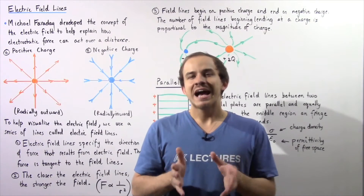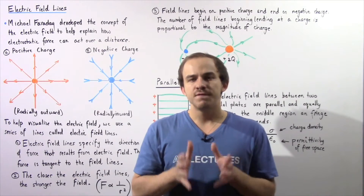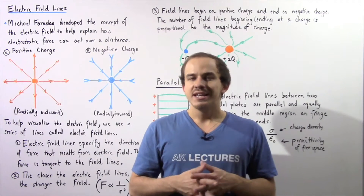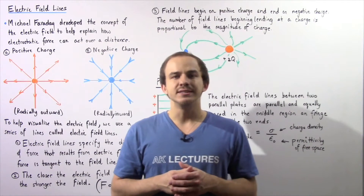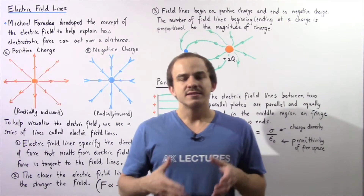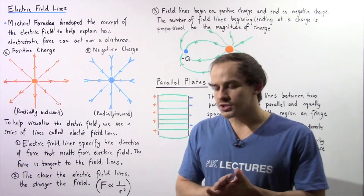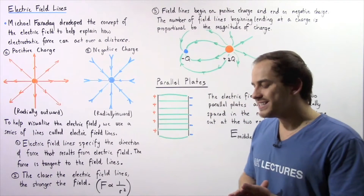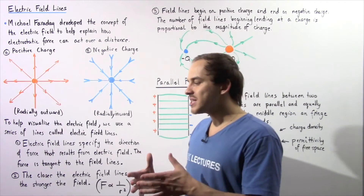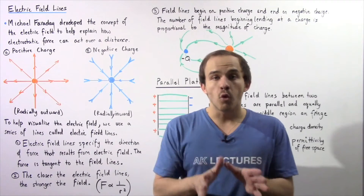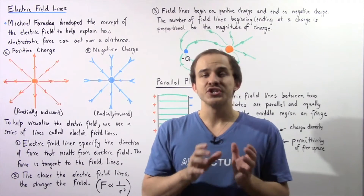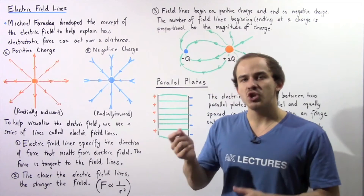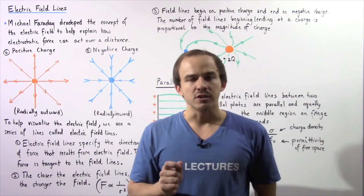Early scientists and thinkers had trouble visualizing how a force can act over a distance. An English scientist by the name of Michael Faraday studied electrostatic force, which is one example of a force that acts over a distance. To help us understand how the electrostatic force can act over a distance, he came up with the concept known as the electric field.